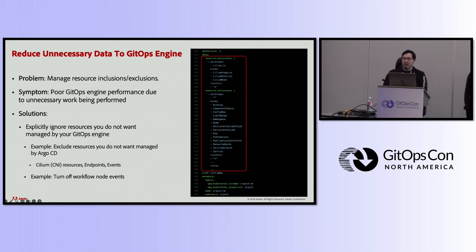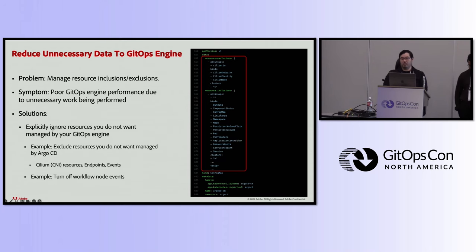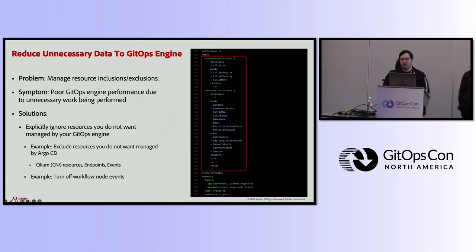Another problem was that our GitOps engine was performing poorly due to unnecessary work. We tackled this by reducing the number of Kubernetes resources it was managing by specifying resource inclusions and exclusions. The important point is to exclude things you really don't want your engine to manage — for example, CNI resources like those associated with Cilium or endpoints. Argo CD keeps all resources it's managing in memory, so it's best to exclude anything you don't need. On Argo Workflows, we did something similar by excluding node events, which were not needed in our environment.